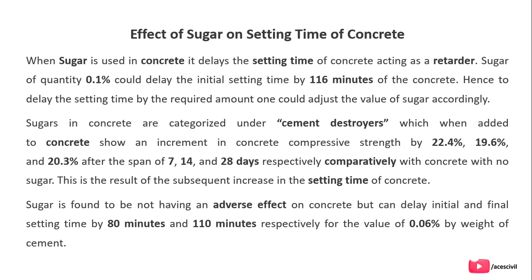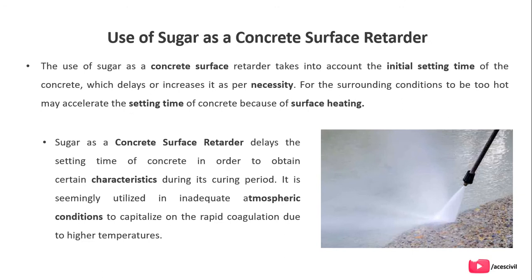Comparatively, with concrete containing no sugar, the result shows a subsequent increase in setting time with sugar added. Sugar is found to not have an adverse effect on concrete, but can delay initial and final setting time by 80 to 110 minutes respectively for the value of 0.06% by weight of the cement.